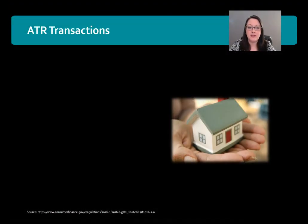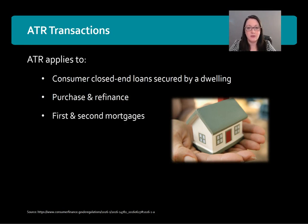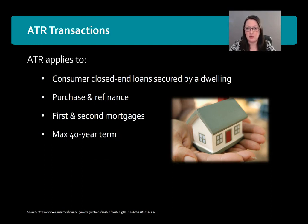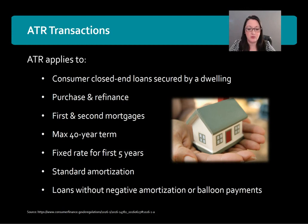Now, the Ability to Pay transactions — here are the loans available under the ATR rule. They apply to consumer closed-end loans secured by a dwelling, including purchases or refinances, first and second mortgages. That excludes home equity lines of credit, since a HELOC is not a closed-end mortgage. It also applies to a maximum 40-year loan term, fixed rate for the first five years, standard amortization loans, and loans without negative amortization or balloon payments.